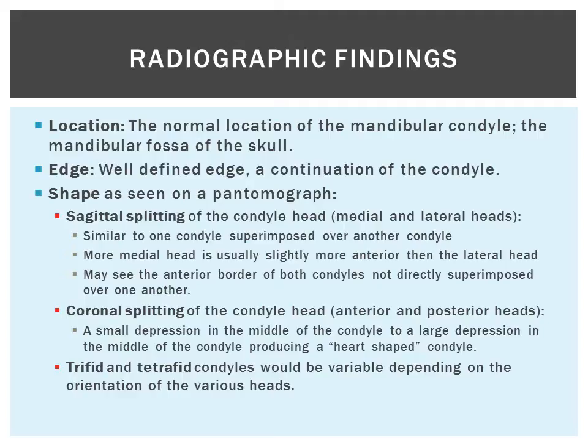The shape can be of several kinds. First, a sagittal split of the condylar head makes lateral and medial heads. On a pantomograph, this looks similar to one condylar head superimposed over the other, but the medial head is usually more anterior than the lateral head, so you can usually see the anterior border of both heads. With a coronal split, anterior and posterior heads are formed, and on a pantomograph this looks like a small depression in the middle of the condylar head, sometimes making a heart-shaped condyle.